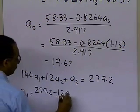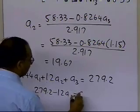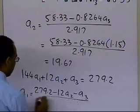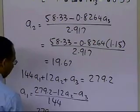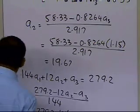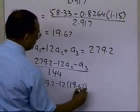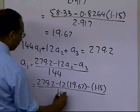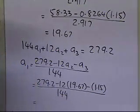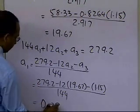This gives us 279.2 minus 12 times 19.67 minus 1.15, divided by 144, which equals 0.2917.